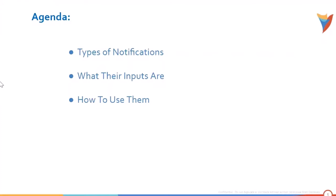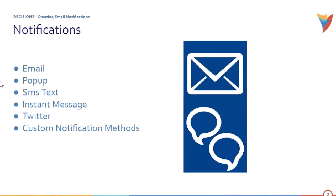Decisions supports notifications in the form of emails, pop-ups, SMS and text/instant messages, Twitter, as well as custom notification methods. The Decisions platform consists of an extensive list of default notification types, which are the actions that trigger the system to send a notification, including for accounts created, site published, or groups deleted.